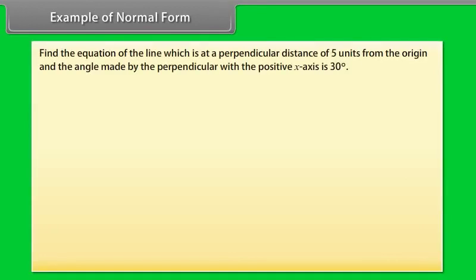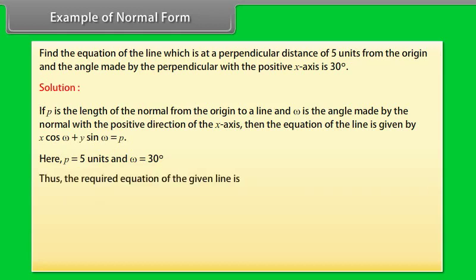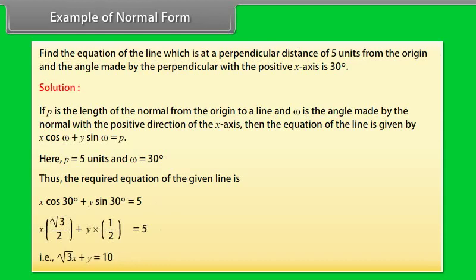Example of normal form: Find the equation of the line which is at a perpendicular distance of 5 units from the origin, with the angle made by the perpendicular with the positive x-axis being 30 degrees. Solution: Using x cos ω + y sin ω = p, with p = 5 and ω = 30°, the required equation is x cos 30° + y sin 30° = 5, which simplifies to x√3 + y = 10.